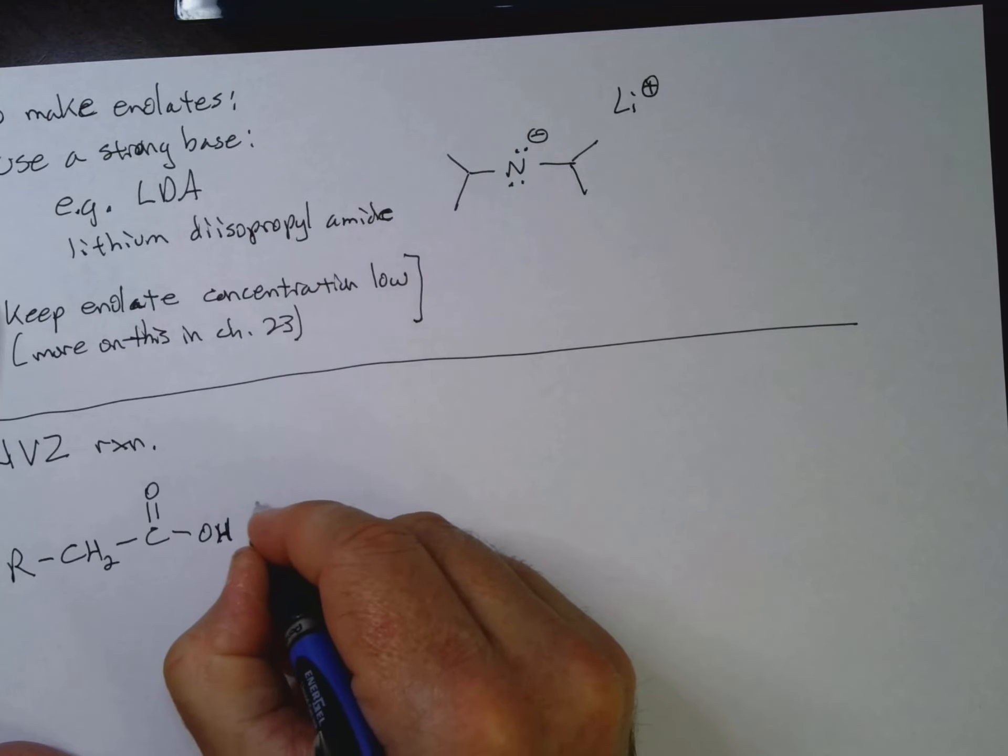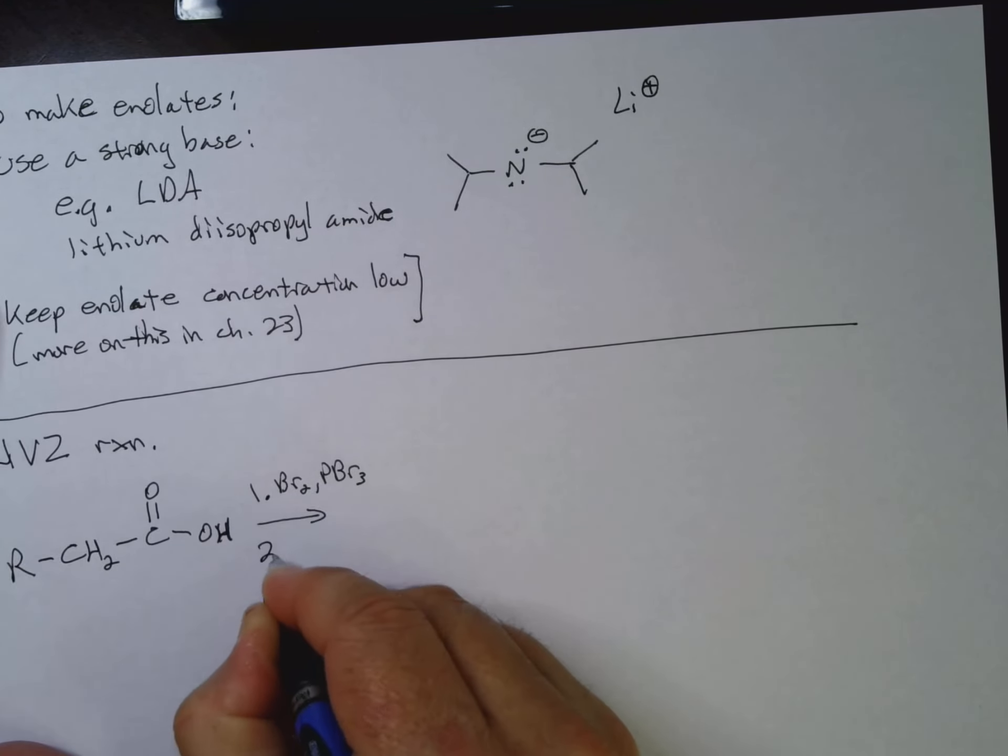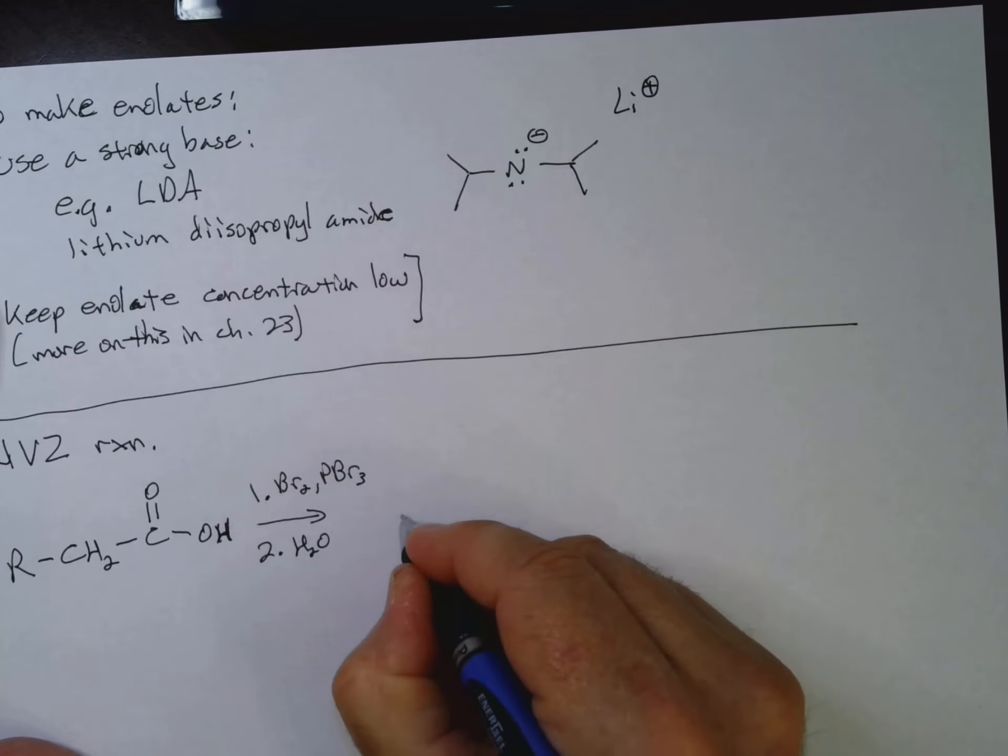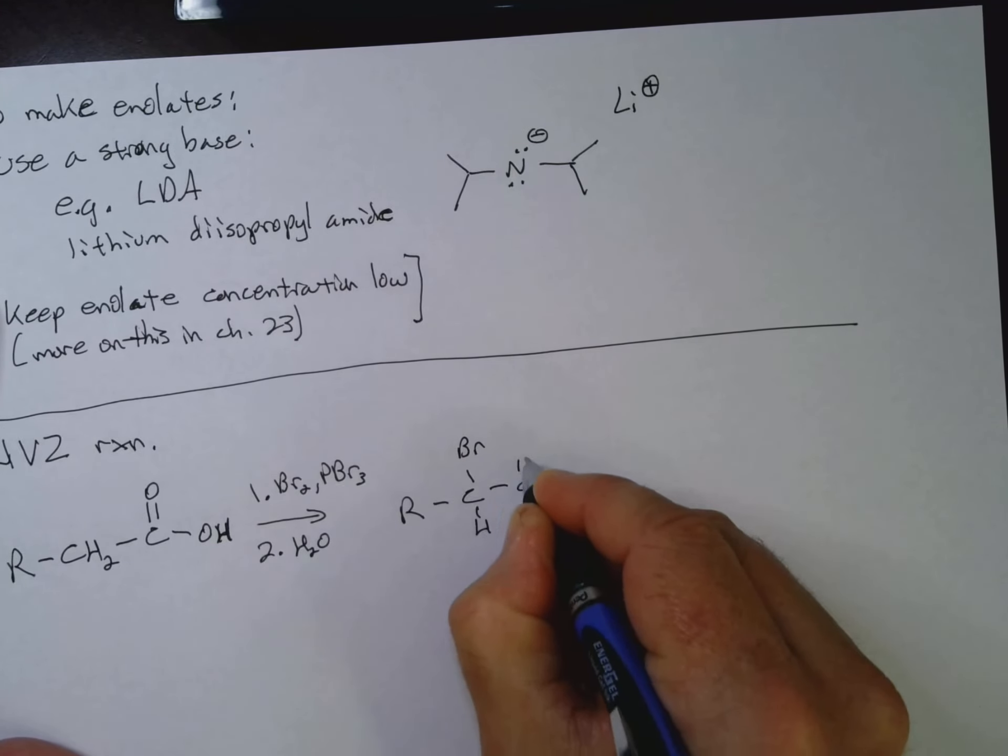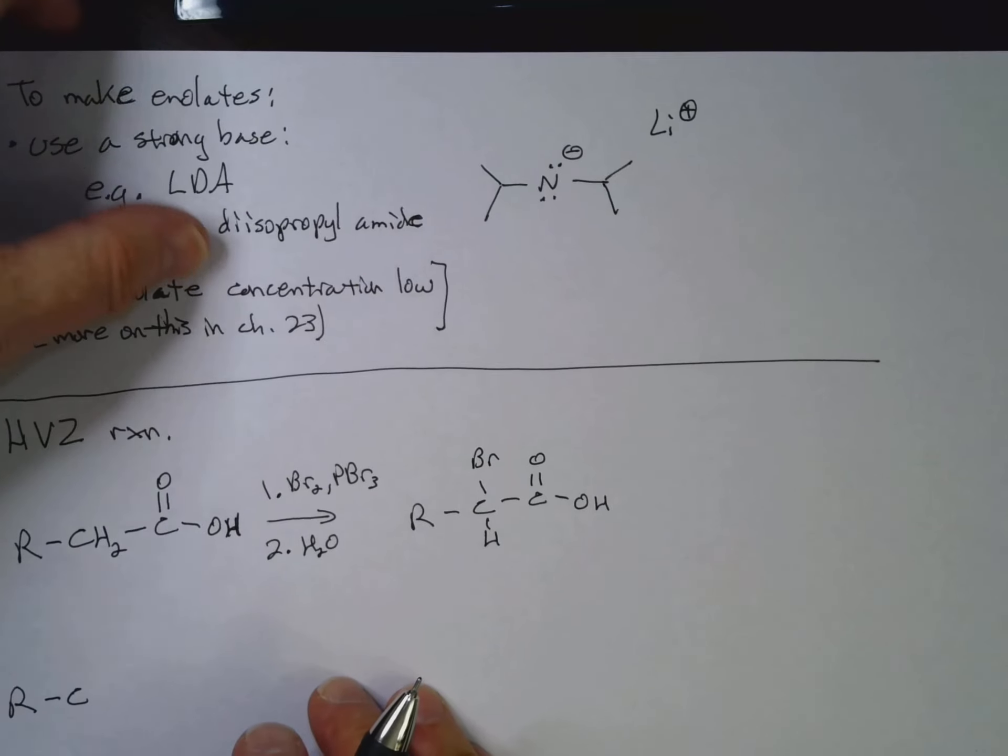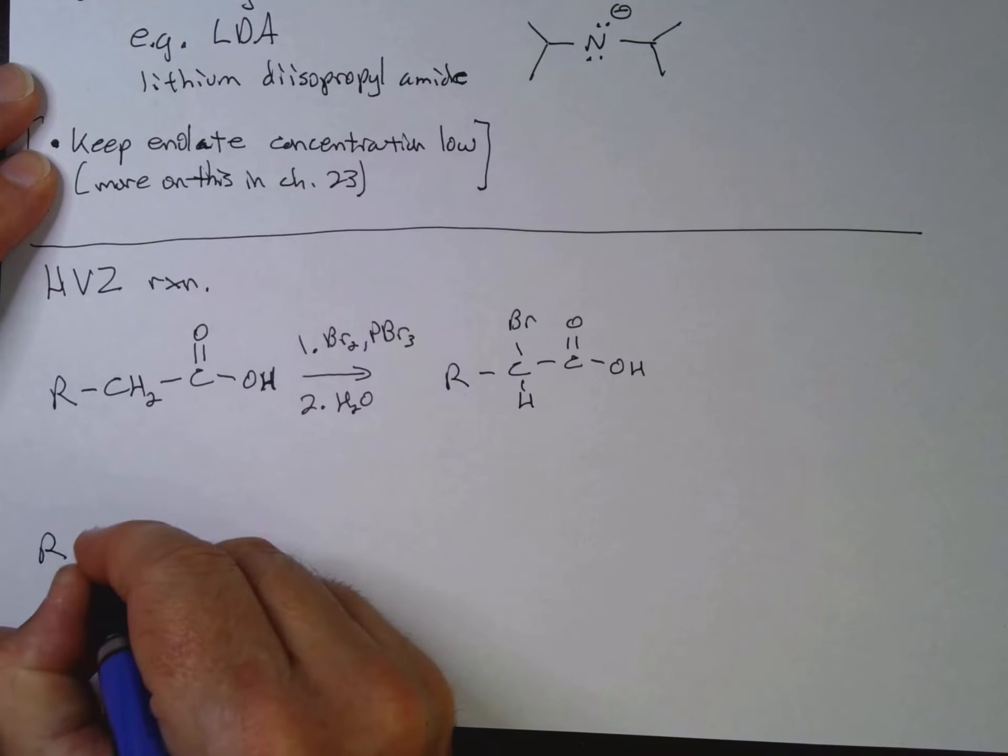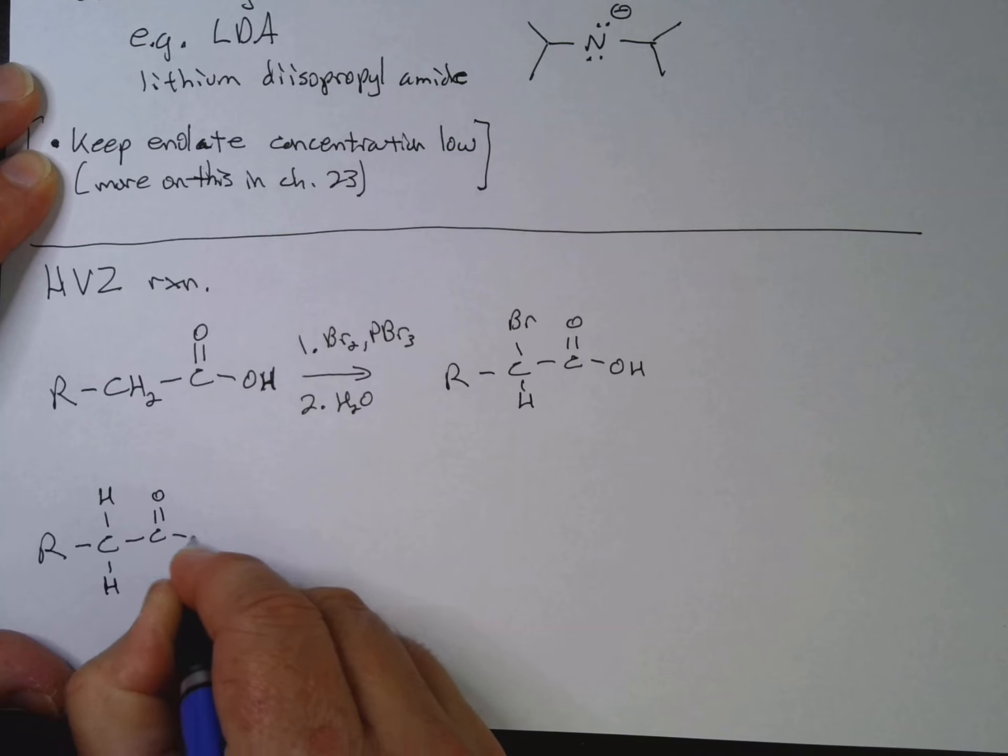I'll do 1, Br2, PBr3, and then 2, H2O. And we'll actually get C-H-Br-C-O-O-H. Now, what's happening here? Well, if I... Oops, sorry. I'll get a little slanted there. Let's straighten that up there. If I start with just my PBr3, what does PBr3 do? Well, PBr3 will do what SOCl2 does, except with bromine. So it's our way of making our acid bromide.